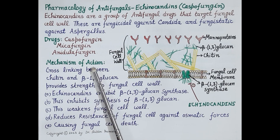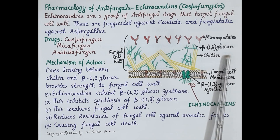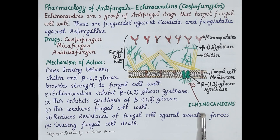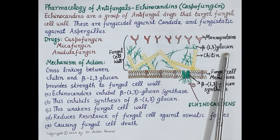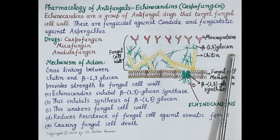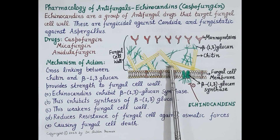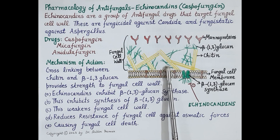Now let's discuss the mechanism of action of echinocandins. Beta-1,3 glucan is a critical component of the fungal cell wall. Echinocandins inhibit the fungal enzyme beta-1,3 glucan synthase, which is required for the synthesis of glucan. Inhibition of this enzyme inhibits synthesis of beta-1,3 glucan, which weakens the fungal cell wall, reducing its resistance against osmotic forces.